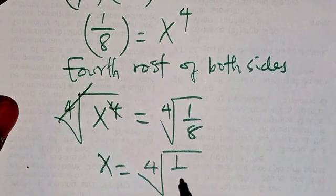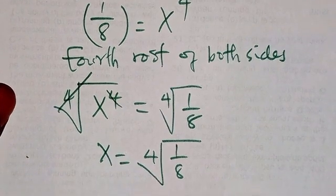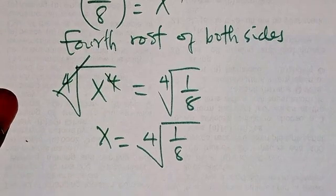We can write it like that in that form, fourth root of one over eight.